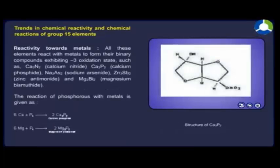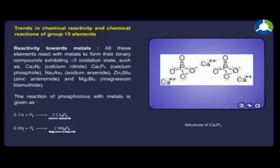Reactivity towards metals. All these elements react with metals to form their binary compounds exhibiting -3 oxidation state, such as Ca₃N₂, Ca₃P₂, Na₃As₂, Zn₃Sb₂ and Mg₃Bi₂. The reaction of phosphorus with metals is given as: 6Ca reacts with P₄ to give 2Ca₃P₂. 6Mg reacts with P₄ to give 2Mg₃P₂.